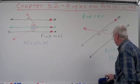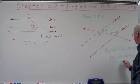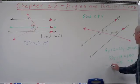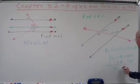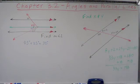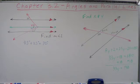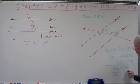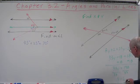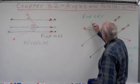Now we add 18 to both sides: 33Y = 198. Then we divide by 33, and Y equals 6.